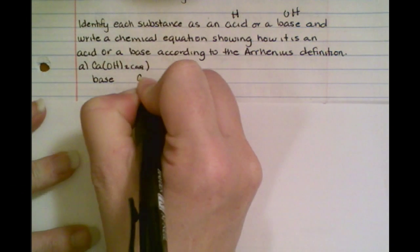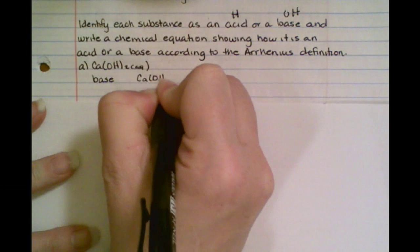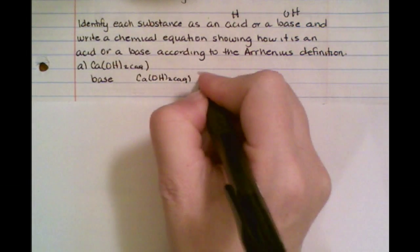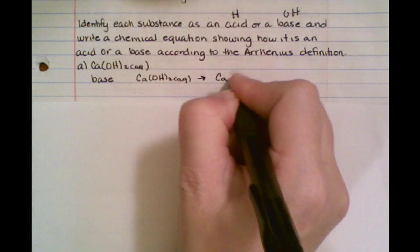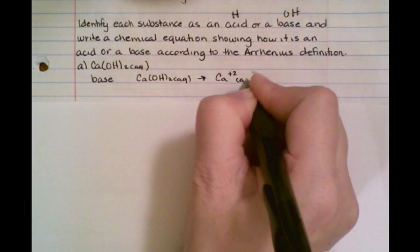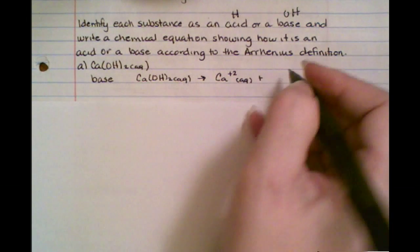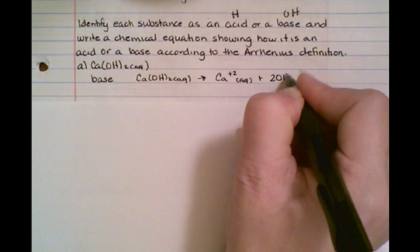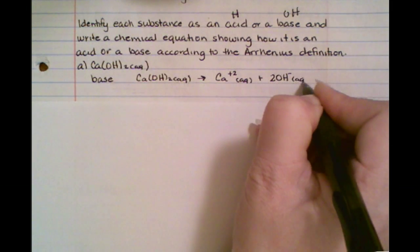And when I write it out, remember to write it with an aqueous behind it so we know that it's in solution. It's going to get calcium ions in solution. And how many OHs do you see? Well, I see 2, so it's going to get 2 OH in solution.